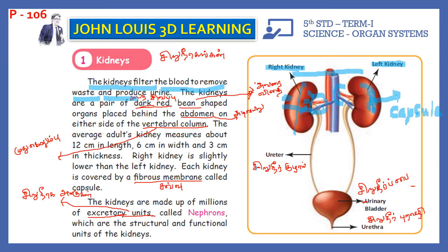What is the name of the excretory units present in the kidney? Nephrons. Which are the structural and functional units of the kidneys? Nephrons.